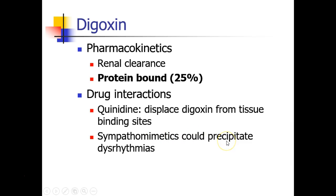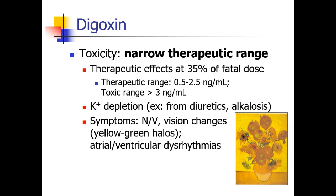Some sympathomimetic agents can also precipitate dysrhythmias in patients already taking digoxin. Most importantly, digoxin has a very narrow therapeutic range — the therapeutic dose is around 35% of the fatal dose. For example, the therapeutic range might be 0.5 to 2.5 nanograms per milliliter, while the toxic range is above 3 nanograms per milliliter. This drug must be dosed carefully, often with serum level monitoring.